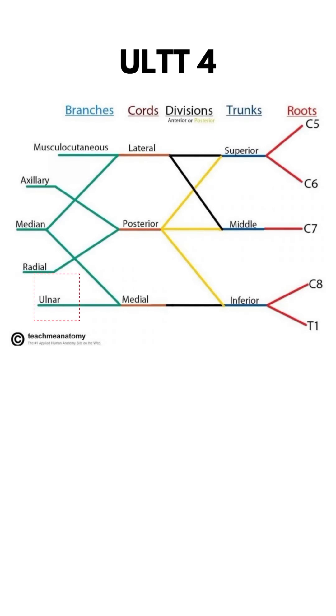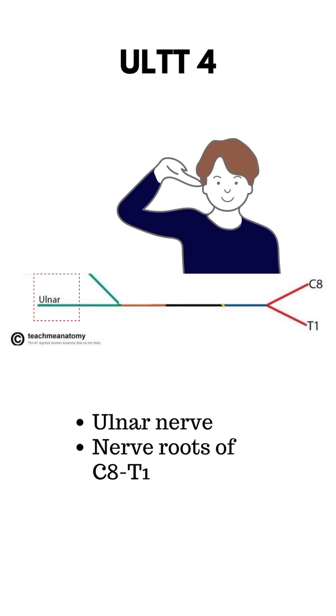For ULTT 4, it's the last one, it's U, Ulnar. If you look at the hand, it looks a bit like a rotated U. Additionally, in ULTT 4, we also tested the nerve roots of C8 to T1.